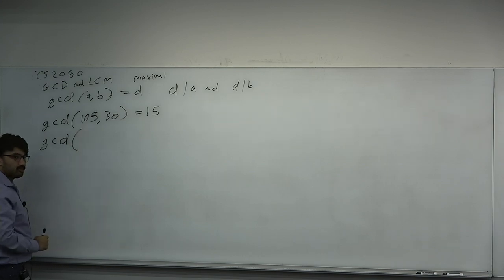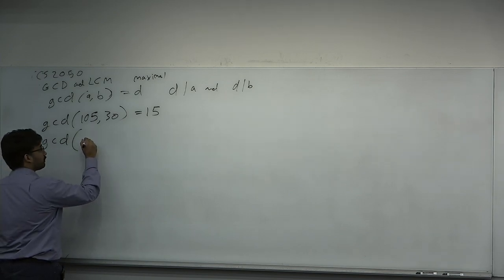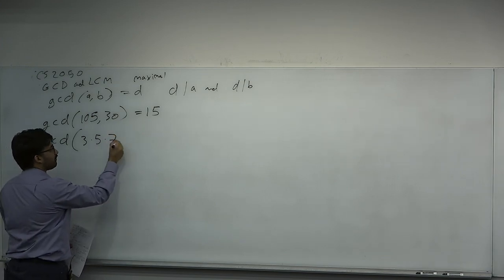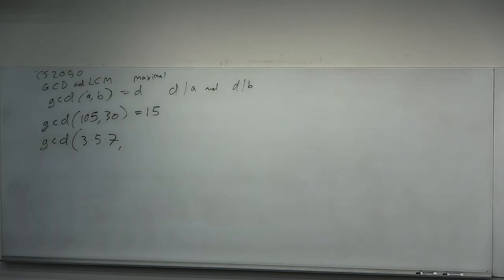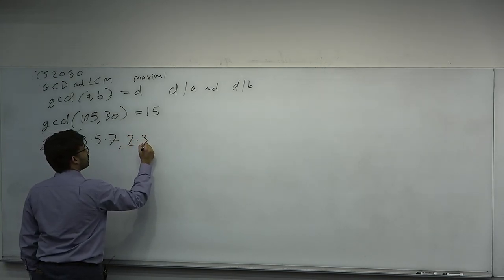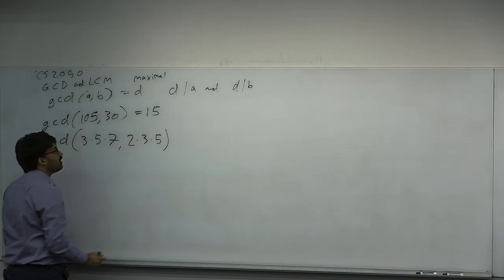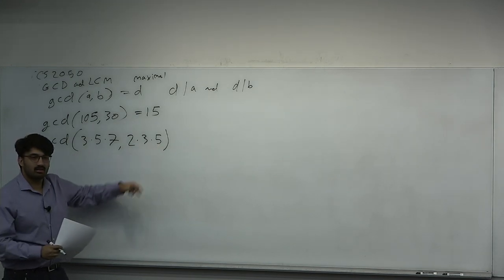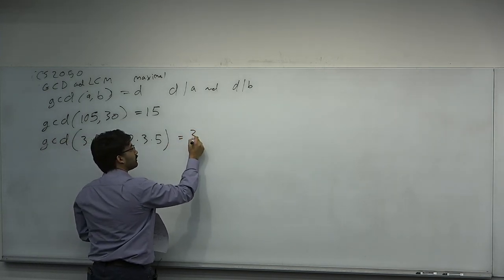Taking the set intersection: there's a 3 and a 5 in 105, and there's a 3 and a 5 in 30. So the output is going to be 3 times 5, which is 15. What is the GCD of 2 squared and 2 cubed? It's 2 squared, because 2 squared is the largest number that divides both into 2 squared and into 2 cubed.